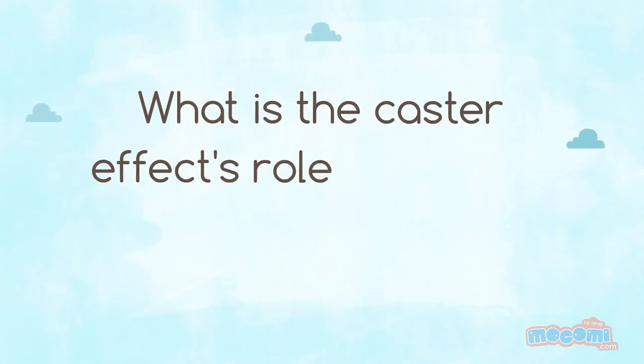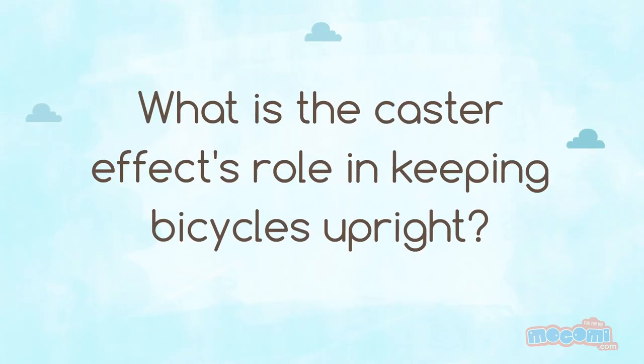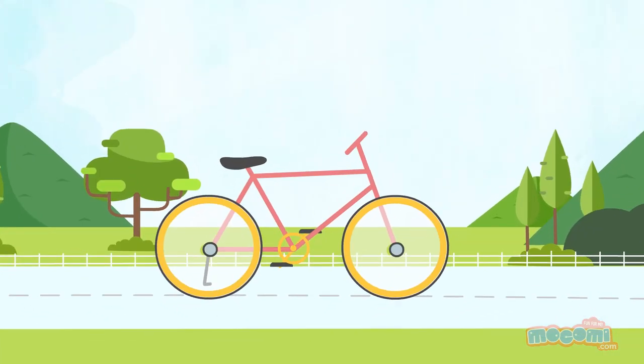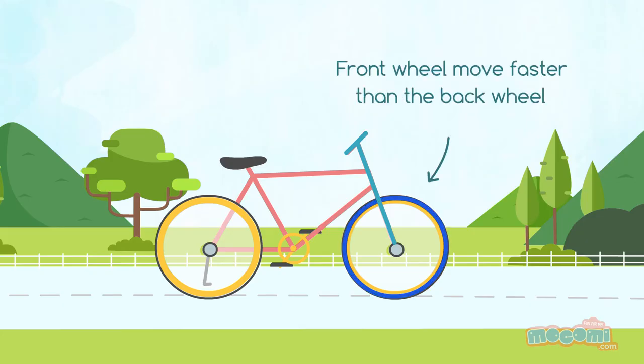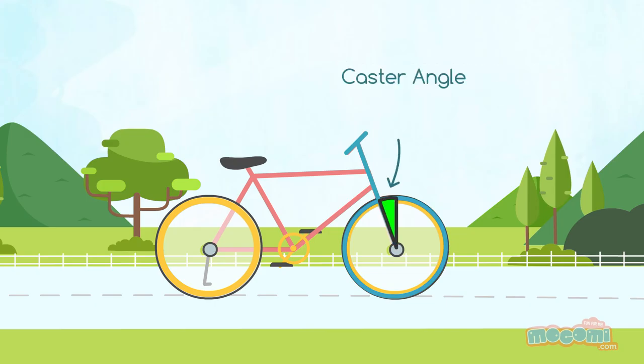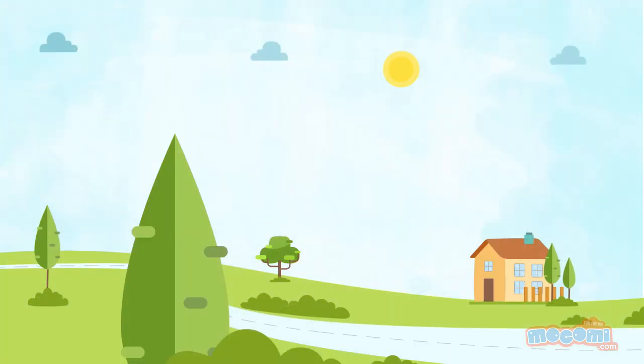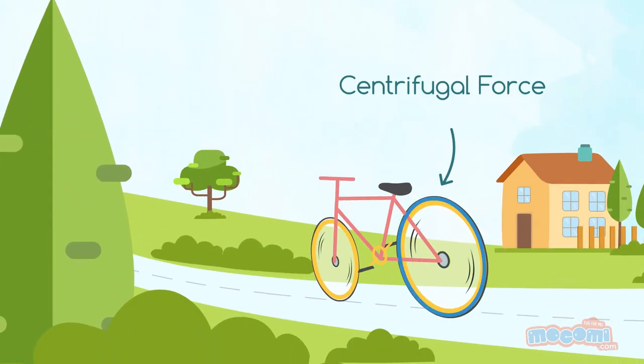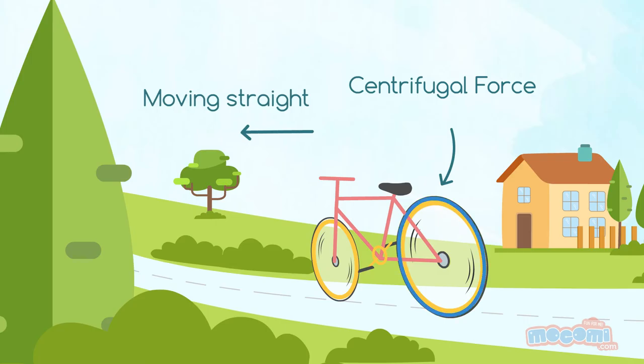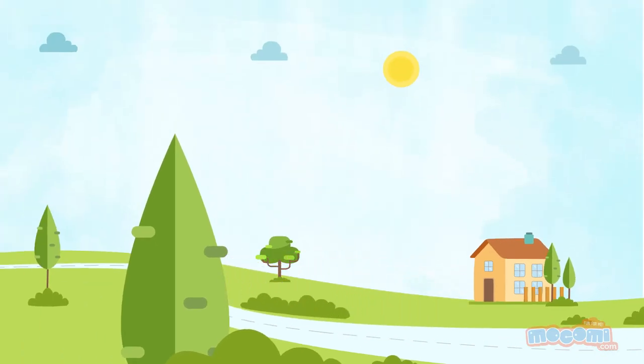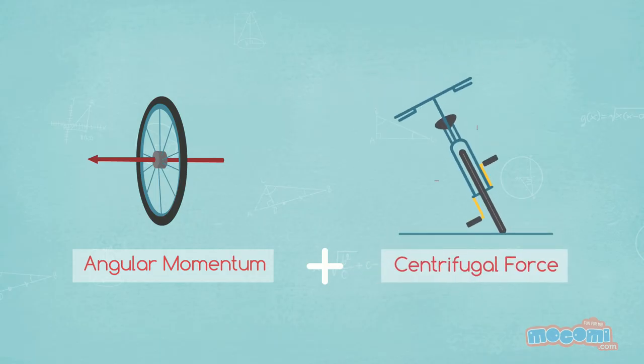What is the caster effect's role in keeping bicycles upright? If you look at a bicycle you will see that it is designed in such a way that the front wheel steering axis makes the front wheel move faster than the back wheel. So, when the bicycle starts moving to the left the centrifugal force of the back wheel would keep it in check because it is still moving straight. The wheel would automatically snap the bike to the right and keep it upright. So, now you know that angular momentum and centrifugal force keeps a bicycle upright when it is moving.